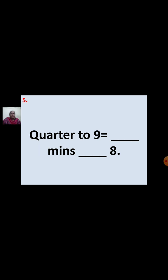Fifth question: Quarter to 9 equal to dash minutes dash 8. Quarter to 9 means 45 minutes past 8. After 8 o'clock, 45 minutes are past. So, quarter to 9 can be written as 45 minutes past 8.